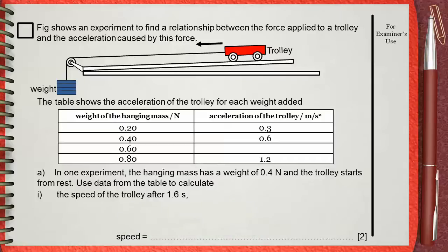Read question A carefully and you will see that he is talking about the second case where the weight of the hanging mass is 0.4 Newtons. In this case, the corresponding acceleration is 0.6 meters per second square.